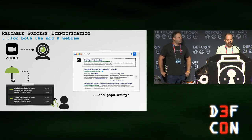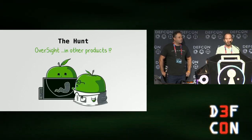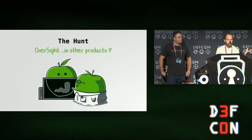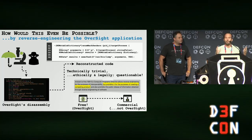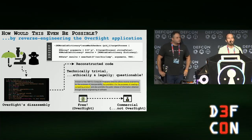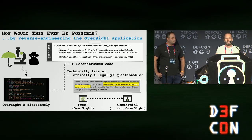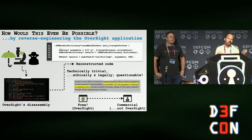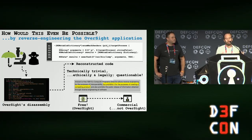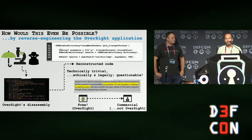Via these three steps, Oversight was very accurately able to identify the process responsible for mic and webcam access. Since it was free, it became very popular. Unfortunately, this popularity came at quite a cost — Oversight was torn apart and its secrets shamelessly stolen for commercial gain. This was far easier than hacking my computer: anyone with basic reverse-engineering skills could reverse-engineer the Oversight binary and reconstruct its algorithm. Technically trivial; ethically and legally, not cool — especially since this was stealing from a free tool for commercial gain.